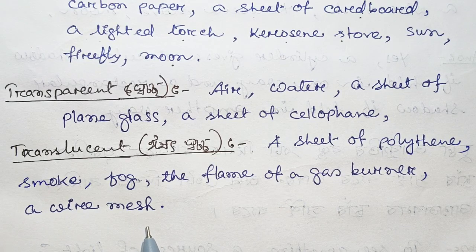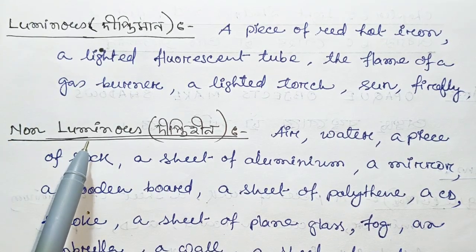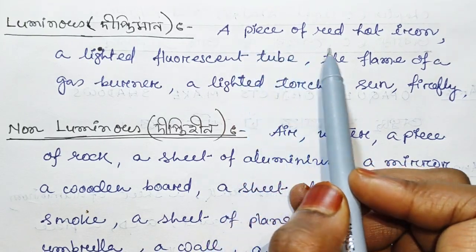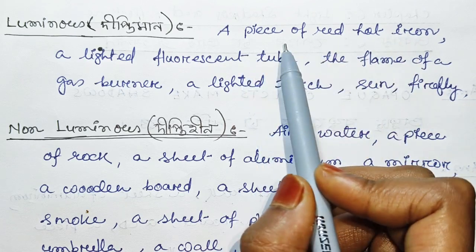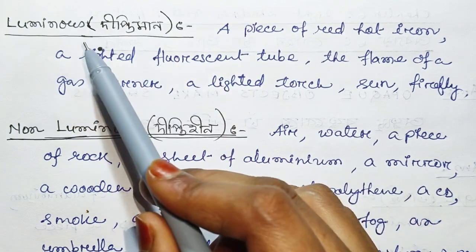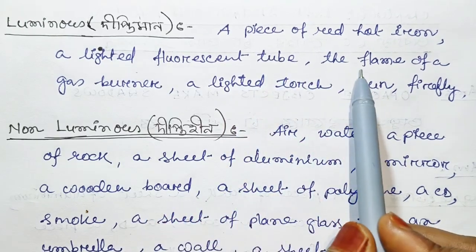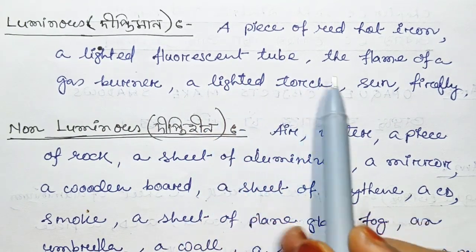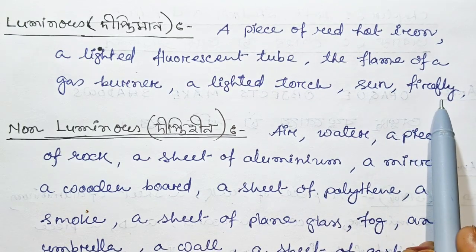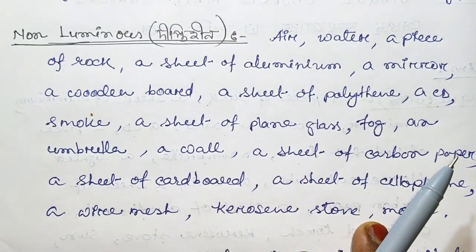The luminous objects from the list are: a piece of red-hot iron, a lighted fluorescent tube, the flame of a gas burner, a lighted torch, the sun, a firefly, and a lighted fluorescent tube.